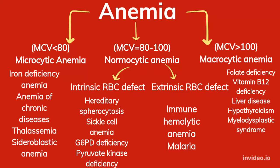If the MCV value is between 80 to 100 cubic micrometers, which is the normal range, but anemia is still present, this is normocytic anemia. The size of RBCs are normal in the blood, but you still have anemia. The cause could be either inside the RBC or outside the RBC. Based on this, it is classified into two types: intrinsic RBC defect and extrinsic RBC defect. Intrinsic RBC defect causes include hereditary spherocytosis, sickle cell anemia, G6PD deficiency, and pyruvate kinase deficiency.